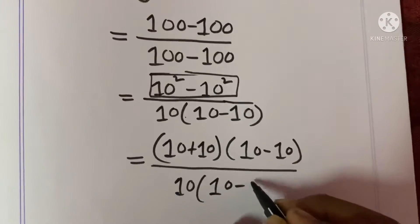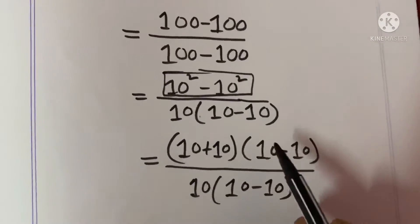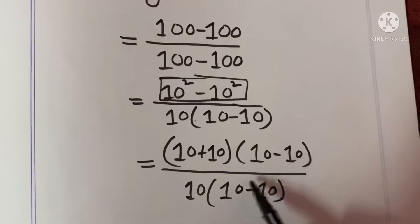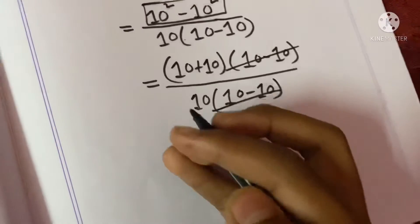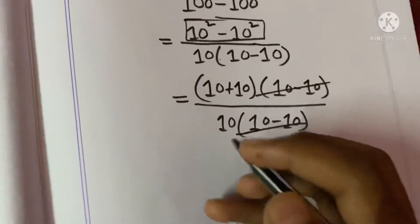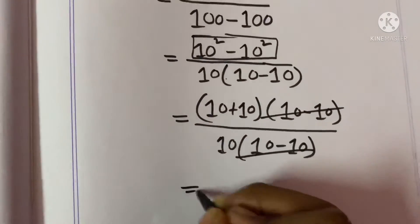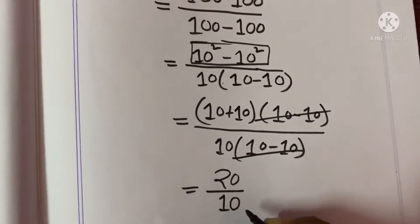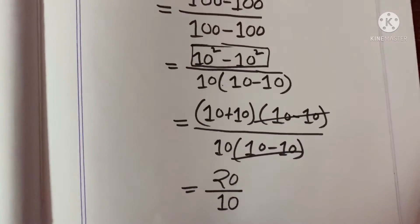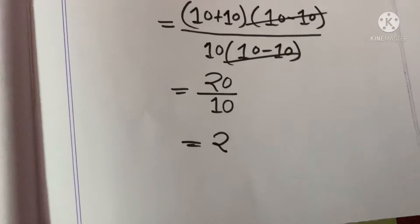So that becomes (10 plus 10) times (10 minus 10) divided by 10 times (10 minus 10). This simplifies to 20 divided by 10, which equals 2. And you can see